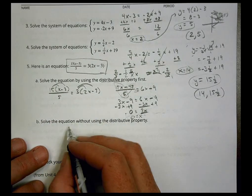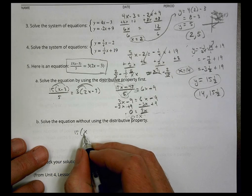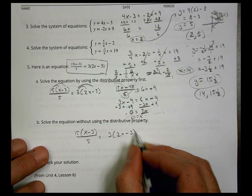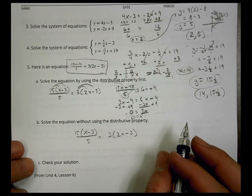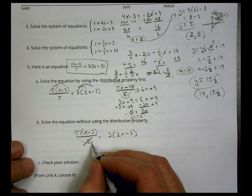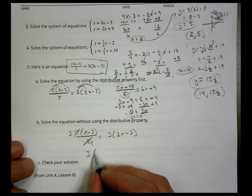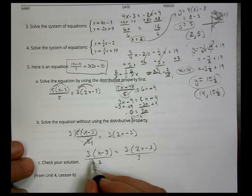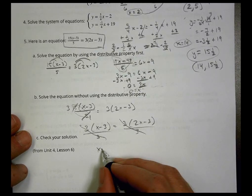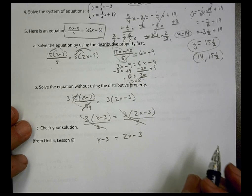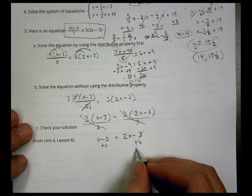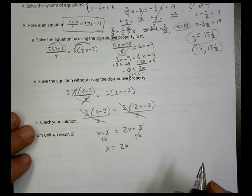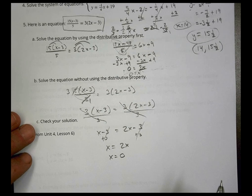And the next one, let's see what happens here without distributing. We have 15(x - 3) over 5 equals 3(2x - 3). So if we did not distribute, what would we do? We could reduce that, first of all. So now I have 3(x - 3) equals 3(2x - 3). I could divide both sides by 3, so that goes away. So now x minus 3 equals 2x minus 3. I can add 3 there. And we're left with x equals 2x, which really doesn't equal 2x, does it now? And so the only way that's going to work is for x to equal 0.